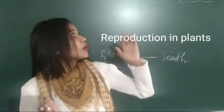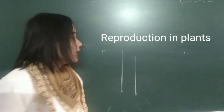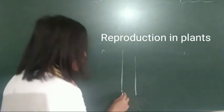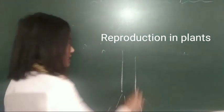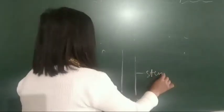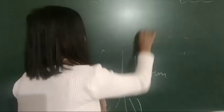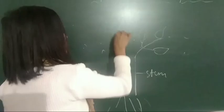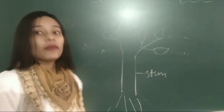Reproduction is the process by which a living organism produces young ones of their own kind. Why do they produce? To avoid extinction, to propagate their species. Here we are talking about reproduction in plants. Let me ask you one question. What are the parts of the plant? Roots, stem, leaves, flower. These are the parts of the plant.